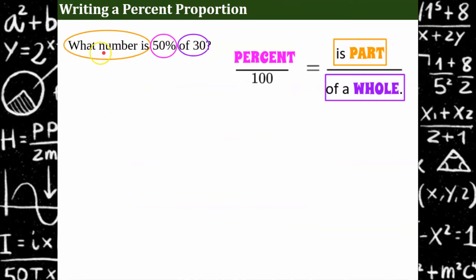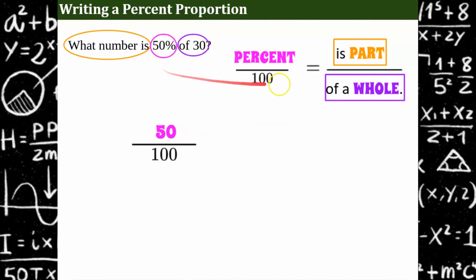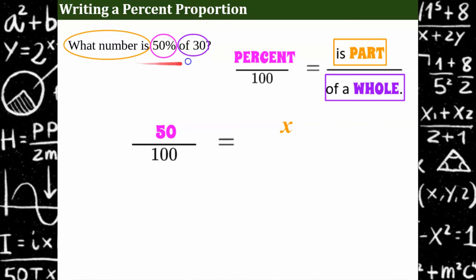So let's go through the first one: What number is 50% of 30? We're going to write the proportion and solve. Again, we're going to use the percent proportion. We know our percent is 50, so we drop the percent symbol and write it as a ratio: 50 out of 100, equivalent to 50%. Then we say this equals the part over the whole. Our part is our unknown, that's x, and our whole is 30. So we put all our parts together — part over whole equals percent — and it forms a proportion.